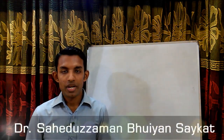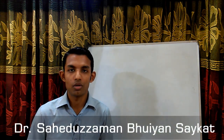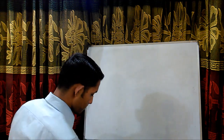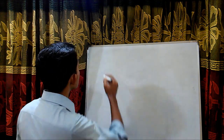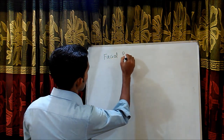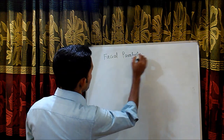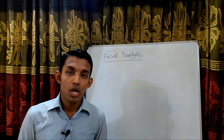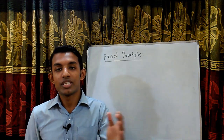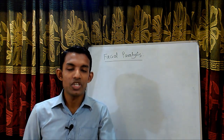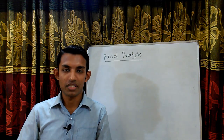Today I'm going to discuss facial paralysis. This is an important topic for understanding stroke, Bell's Palsy, or any other pathology. Facial paralysis means loss of facial movement due to damage to the nerves supplying the facial muscles. So if there is any lesion in the facial nerve, this causes paralysis of the facial muscles.